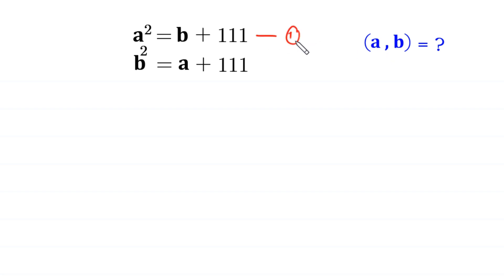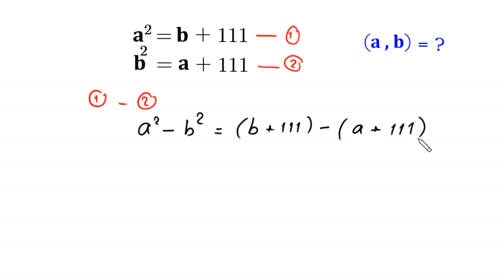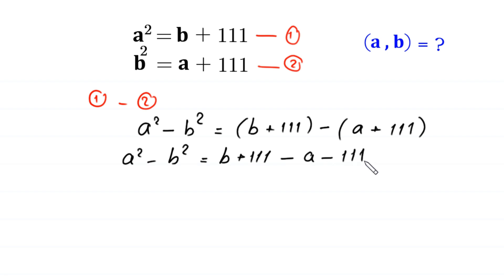Let us call this equation 1 and this equation 2, and we subtract equation 2 from equation 1. The left-hand side gives a squared minus b squared, equal to the right-hand side: b plus 111 minus a plus 111. Simplifying, the 111 terms cancel out, and this equation becomes a squared minus b squared is equal to b minus a.